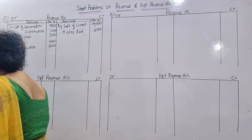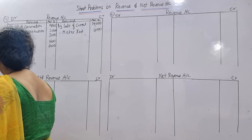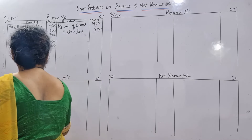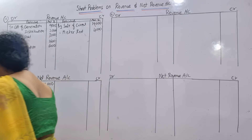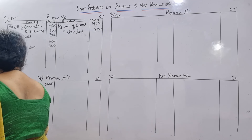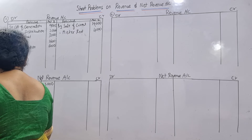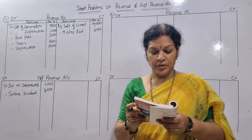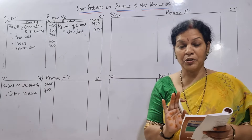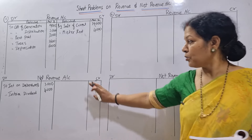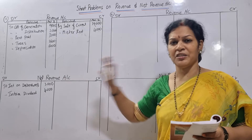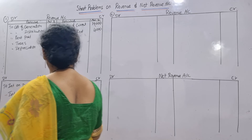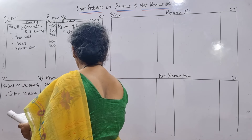Interest on debentures goes on the net revenue account debit side - 3,000. In the same way, interim dividend is also paid - interim dividend 4,000. Next, net revenue account balance from last year - this is the opening balance of this year. For net revenue account, opening balance is always credit side only - by balance brought down, 7,500.